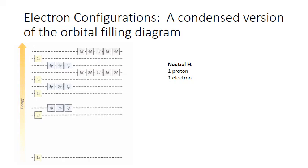To write an electron configuration, we simply indicate the number of electrons at each sublevel with a superscript after the number and letter combination. For example, a neutral atom of hydrogen contains one electron, and that electron goes into the 1s sublevel. The electron configuration that represents this is 1s¹, with the superscript indicating the number of electrons in the 1s sublevel at the first principal energy level.